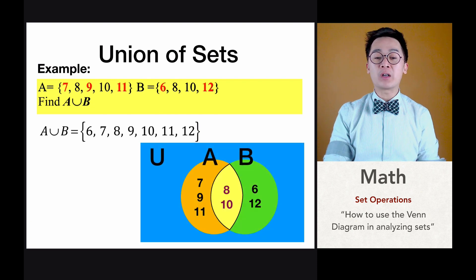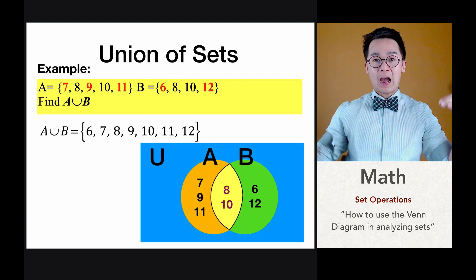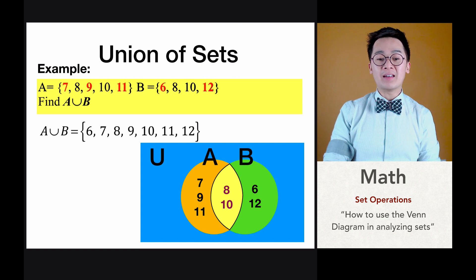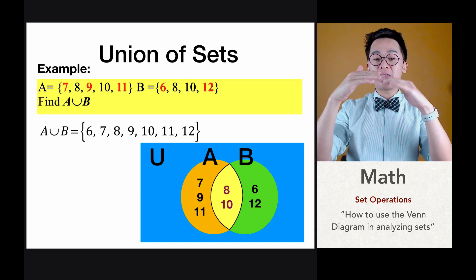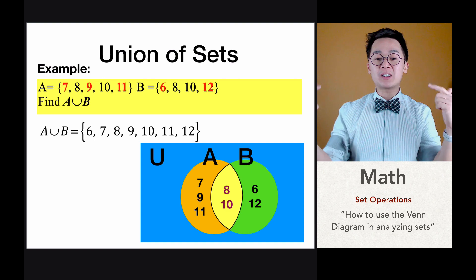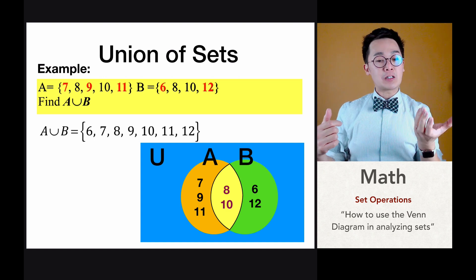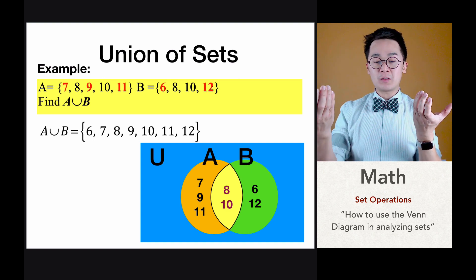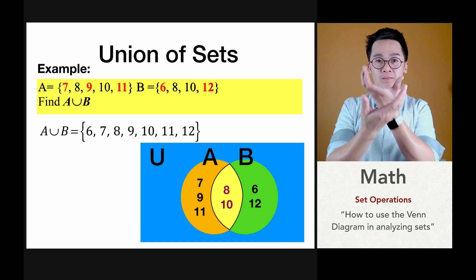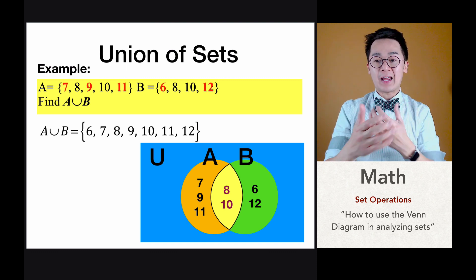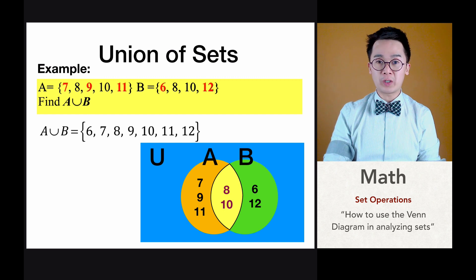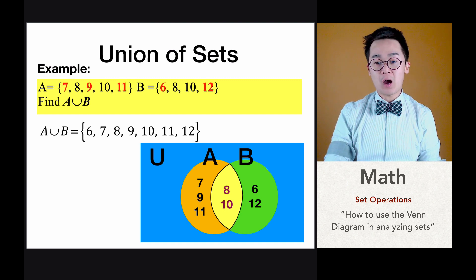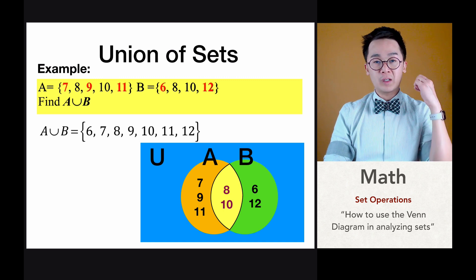This is how we draw the Venn diagram for A union B, using all elements exclusive to A, exclusive to B, and those in the intersection of A and B. These are the main operations in set operations: complement, intersection, and union.